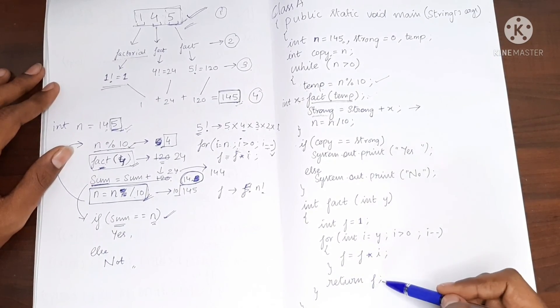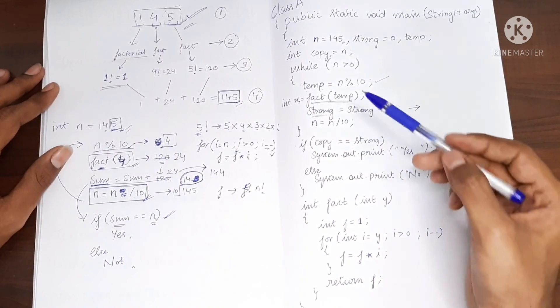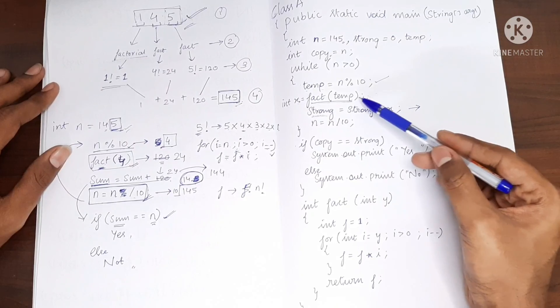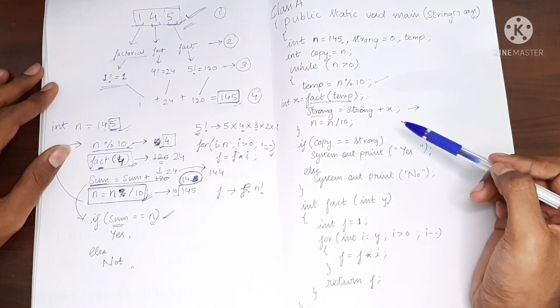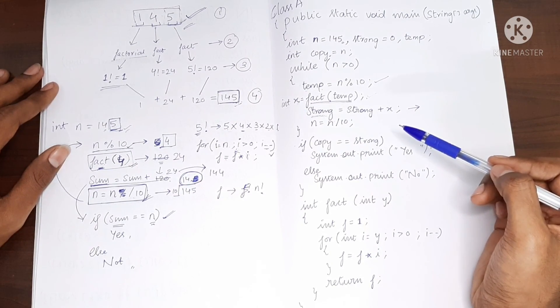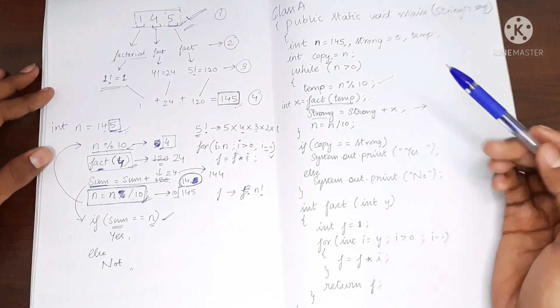The factorial value is received back in x and then added to strong. If you learned something from this video, please leave a like and consider subscribing to my channel. Thank you.